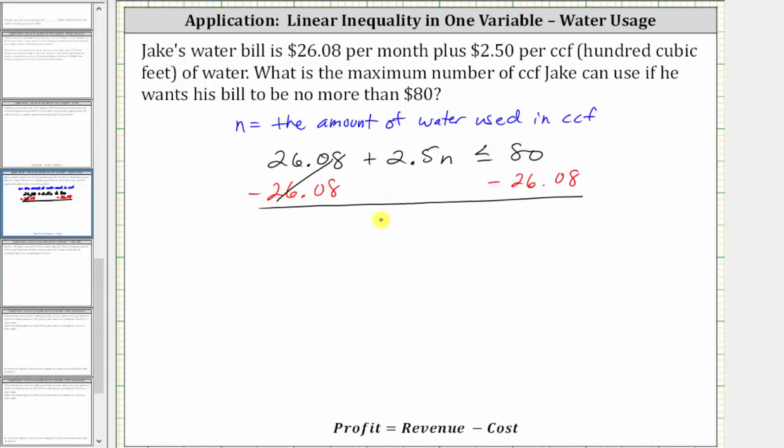The left side simplifies to 2.5N, which is less than or equal to 80 minus 26.08, which is 53.92.